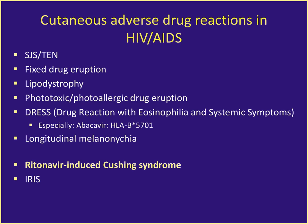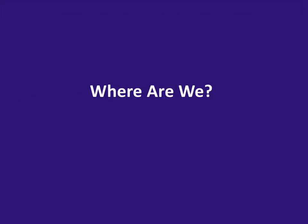This has been a quick whirlwind tour of SJS and TEN, fixed drug eruptions, lipodystrophy, and phototoxic and photoallergic drug eruptions. I didn't mention DRESS — drug reaction with eosinophilia and systemic symptoms — we used to see it a lot from abacavir, but not often now because of HLA-B*5701 testing, though keep it in mind with combination pills containing abacavir. Longitudinal melanonychia from AZT is almost never seen now; emtricitabine can also cause hyperpigmentation of skin and nails. And ritonavir- and cobicistat-induced Cushing syndrome. IRIS is not exactly a drug reaction — we'll talk next time about cutaneous forms of IRIS.